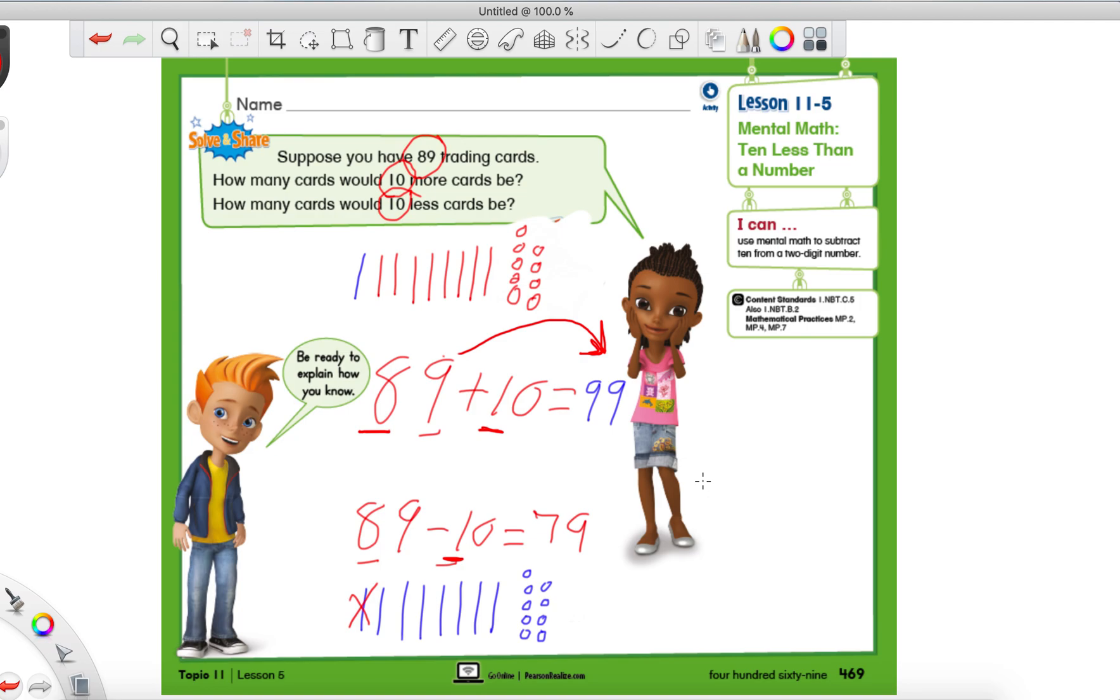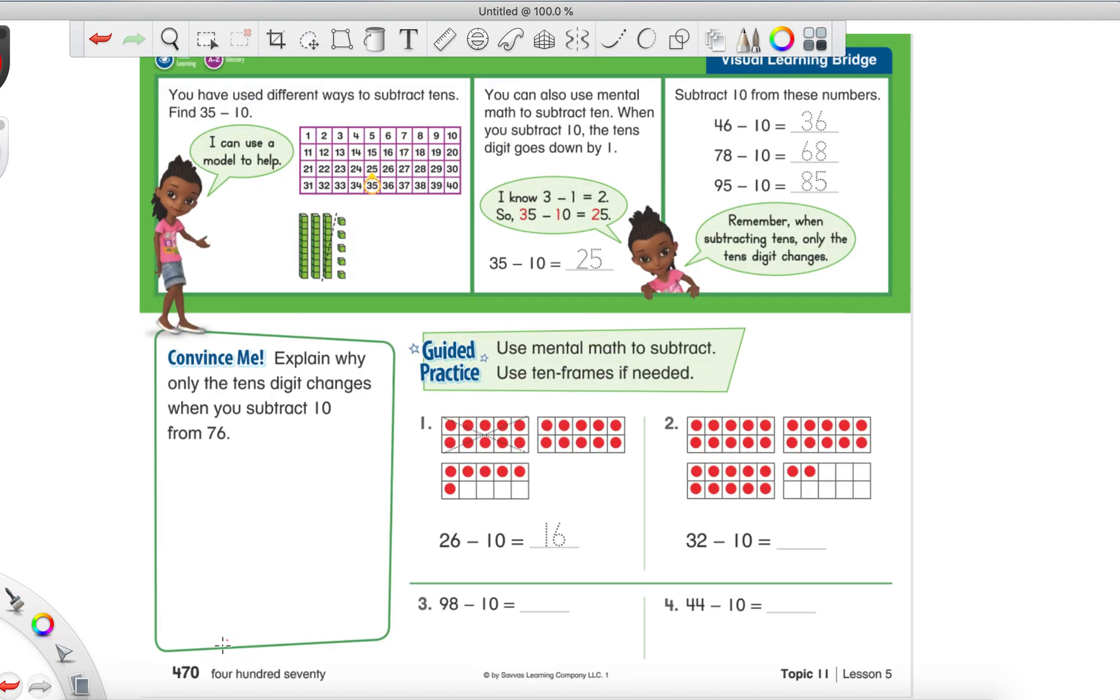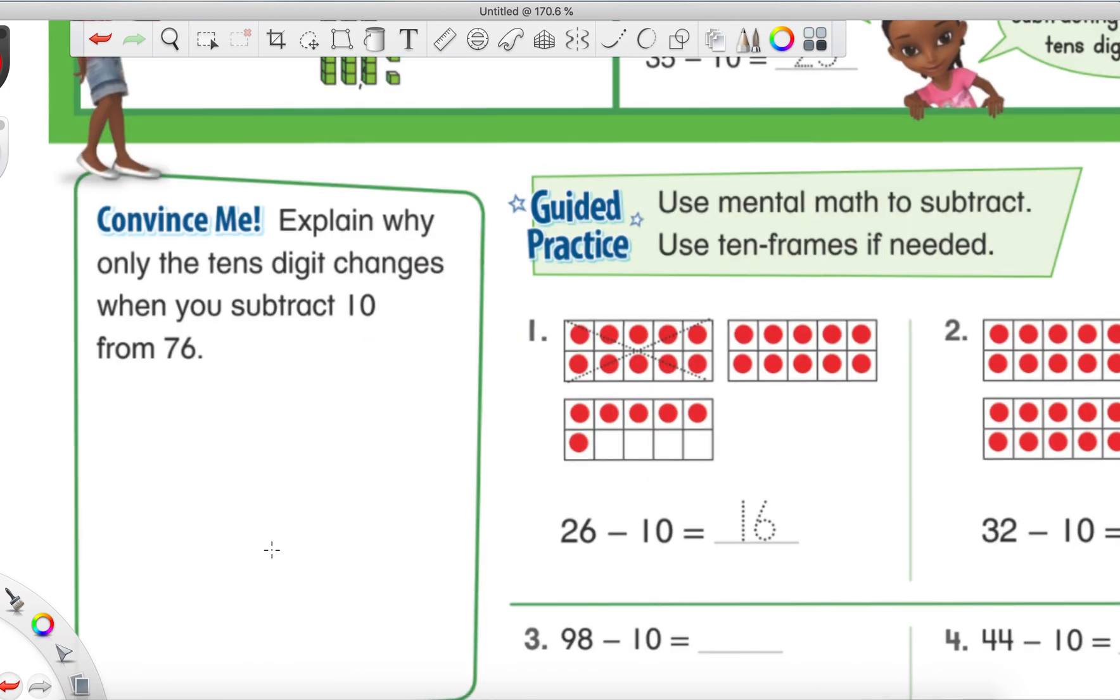All right. So, I don't want to waste too much time on this first problem. Let's jump on over to the next page. Because I just have that feeling that you guys are going to be getting this so fast. So, let's go over to the next page. All right. So, we're on page 470 now. Okay. And, I thought it would be fun to try this little convince me. So, it says right here, Explain why the tens digit changes when you subtract 10 from 76. So, the way we could say this is 76 minus 10. Let's try to solve this one. And, also, why on earth is the tens place the only one that changes?